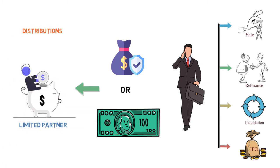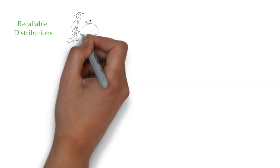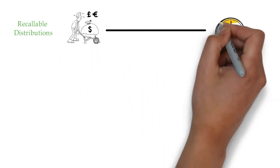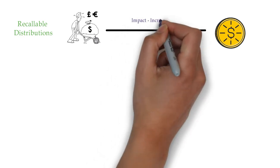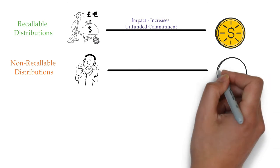Let's discuss the types of distributions in private equity. Recallable distribution: the portion of the distribution that can be recalled in the future. It increases the unfunded commitment. Non-recallable distribution: the portion of distribution that cannot be recalled in the future. It doesn't affect unfunded commitment.